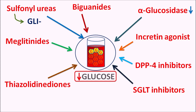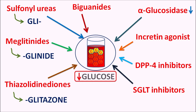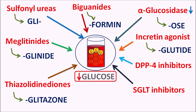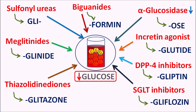Sulfonylureas will have the prefix GLY, which indicates they act on glucose and reduce glucose levels. This term GLY can be observed in many drugs, but as a prefix it is used only for sulfonylureas. Meglitinides can be identified by the suffix GLINIDE. Thiazolidinediones by the suffix GLITAZONE. Biguanides by the suffix FORMIN. Alpha-glucosidase inhibitors by the suffix OSE. Incretin agonists by the suffix GLUTIDE. DPP-4 inhibitors by the suffix GLIPTIN, and SGLT inhibitors by the suffix GLIFLOZIN.